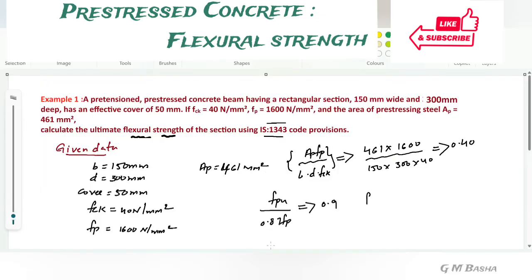So Fp equal to 0.9 into 0.87. What is Fp here? Fp is the tensile stress developed in the tendons at the failure stage of the beam. Substitute these values: 0.9 into 0.87 into fp is 1600 newton per mm square. If you simplify, you will get around 1253 newton per mm square.